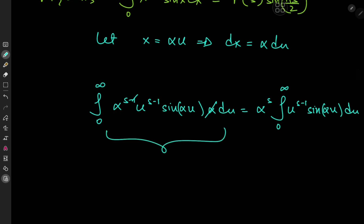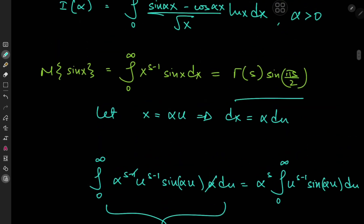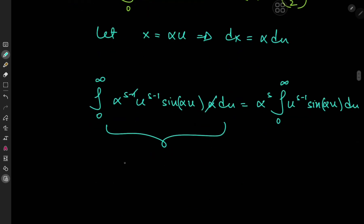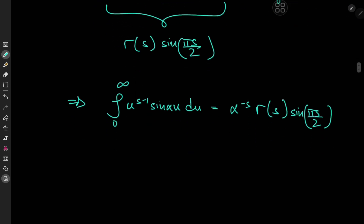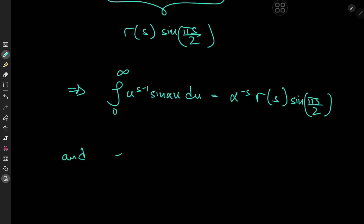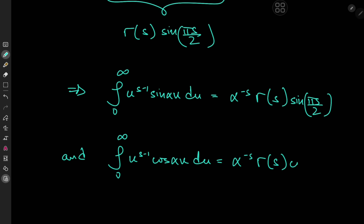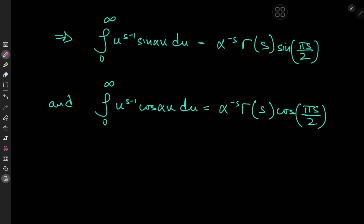The right-hand side is independent of the dummy variable, so it stays as gamma(s) times sine(pi*s/2). With the alpha to the s factor on the right, we can multiply through by alpha to the negative s and get: the integral from 0 to infinity of u to the s minus 1 times sine(alpha*u) du equals alpha to the negative s times gamma(s) times sine(pi*s/2). Following exactly the same procedure, the integral from 0 to infinity of u to the s minus 1 times cosine(alpha*u) du equals alpha to the negative s times gamma(s) times cosine(pi*s/2).